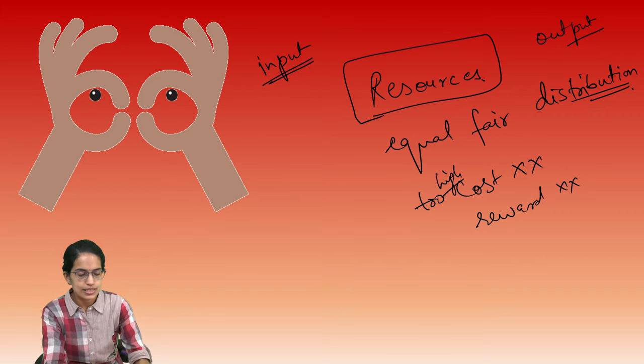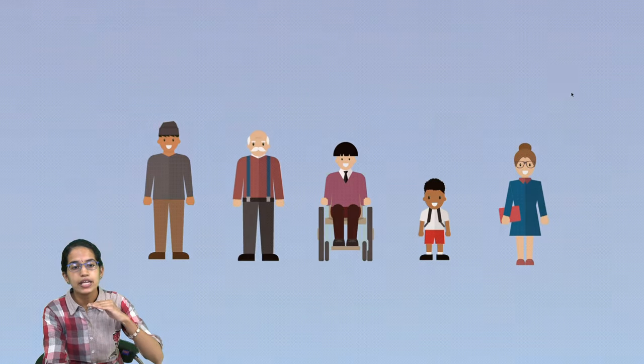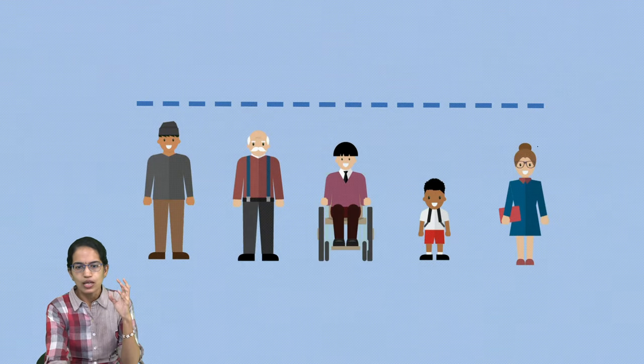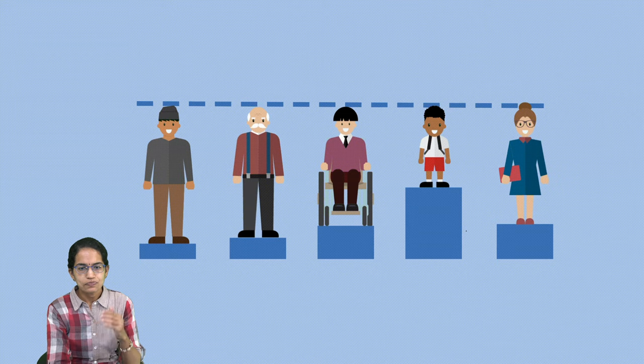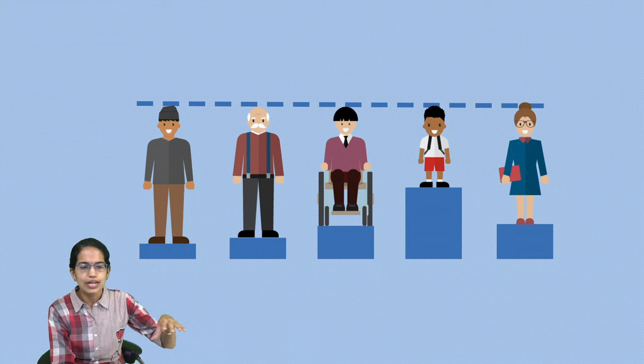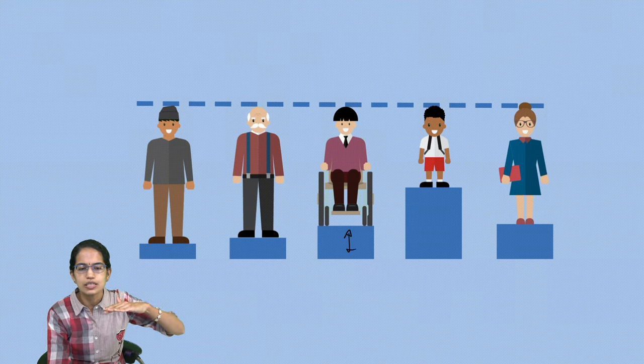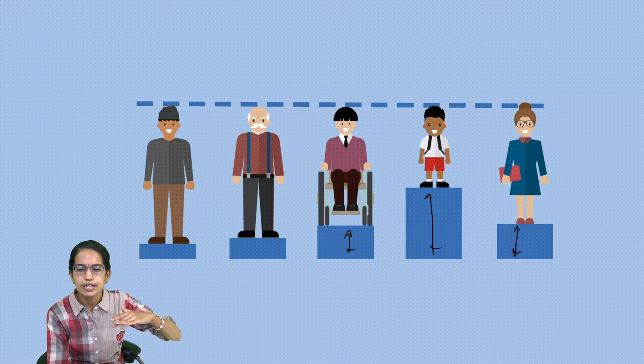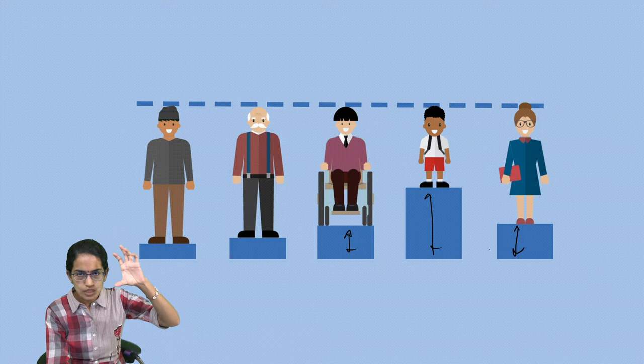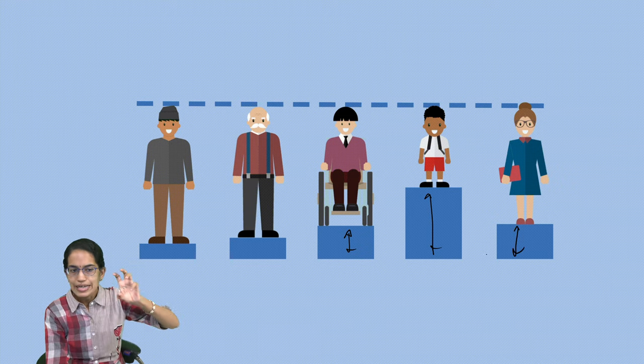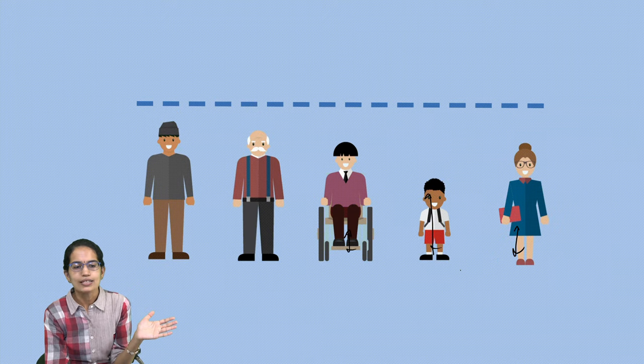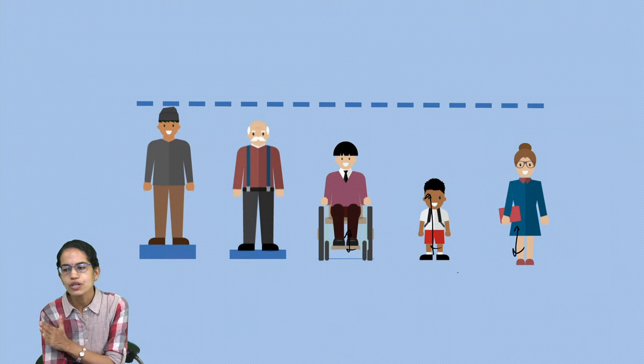But there are certain circumstances where equity is maintained. When the equity is maintained, what does that mean? You are trying to enhance each person according to their capability. Some would require more thrust, others would require less effort to rise. But the idea is to bring everyone on parity.